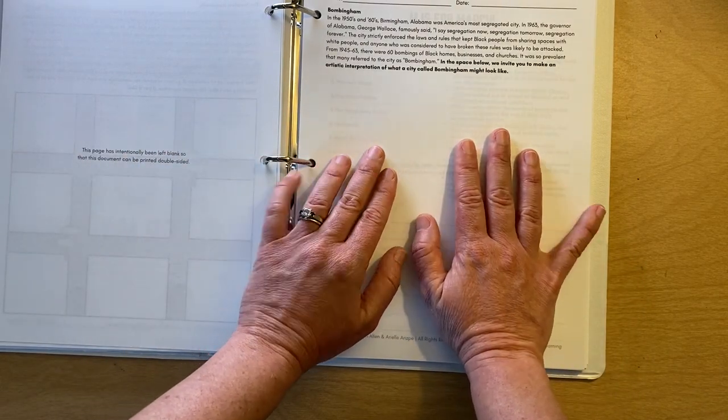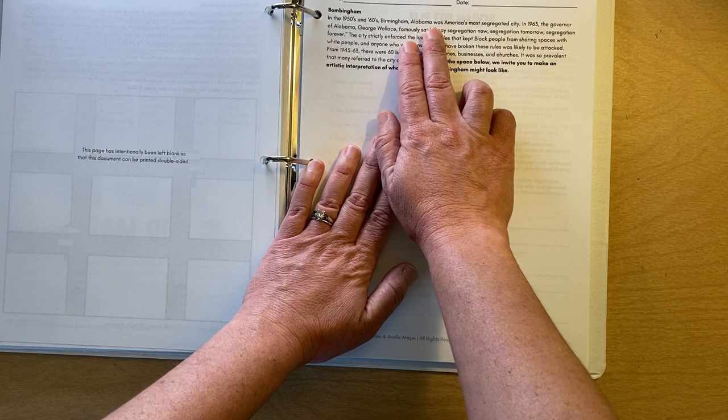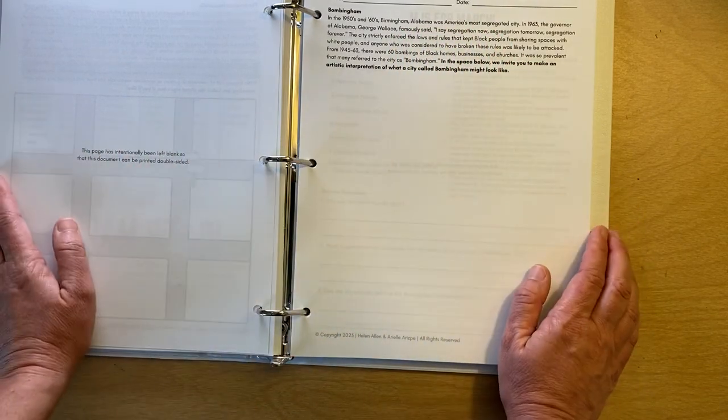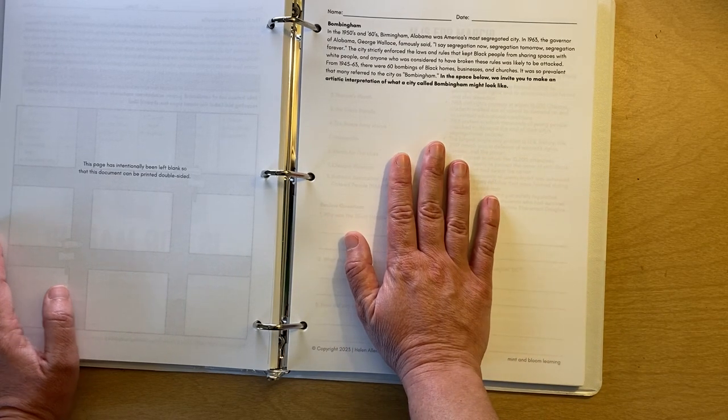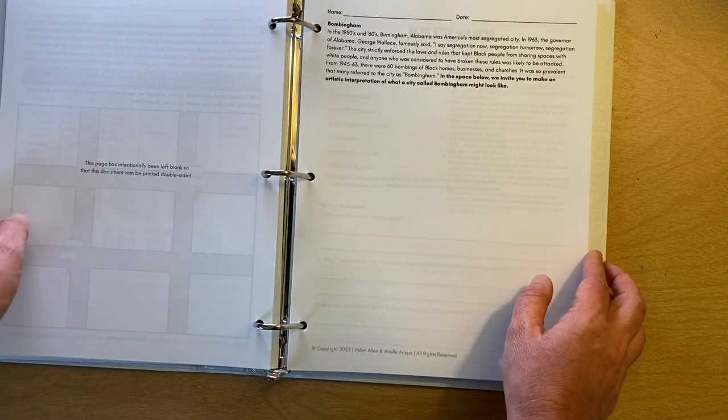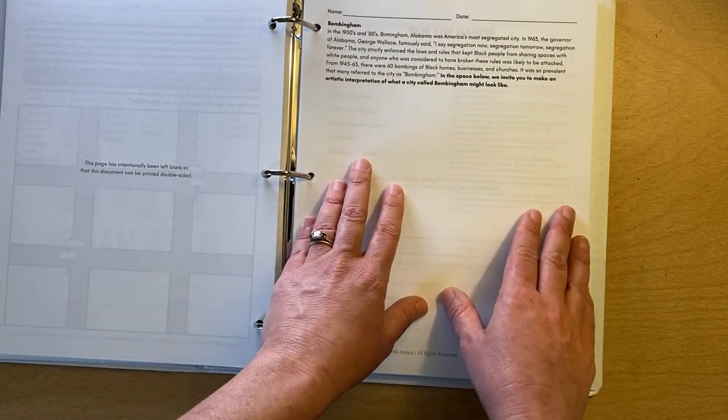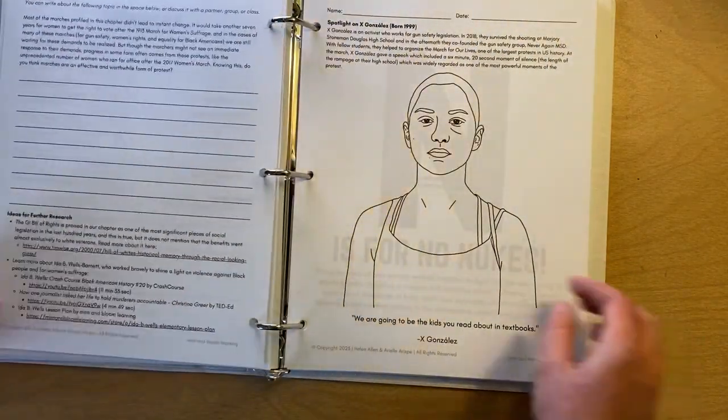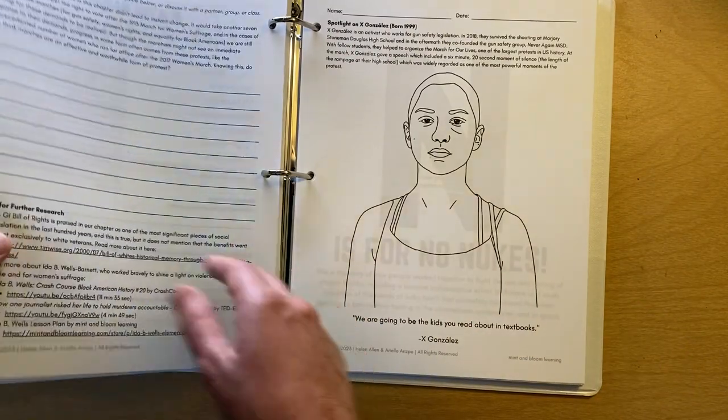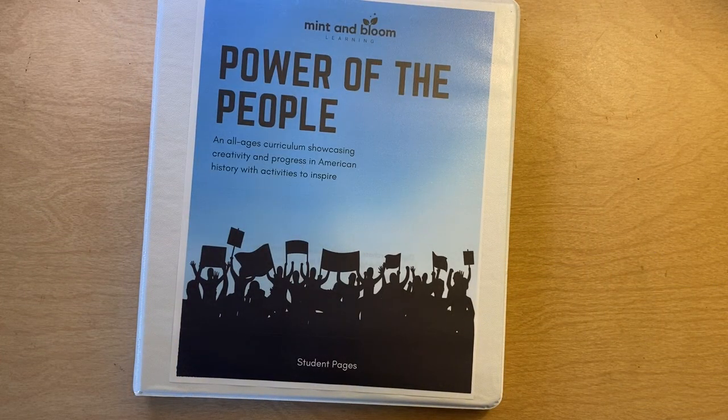We learn about Birmingham, Alabama and the marches that were protesting the segregation there. And that was America's most segregated city at the time. And so much violence happened there as a result of that segregation that the city was nicknamed Bombingham. And so we invite our artists to make an artistic interpretation of what a city of called Bombingham would look like. So I am almost at the 30 minute mark, which is, I think we can all agree, definitely too long. And probably most of you have dropped out before that, but let me put my camera around to say one farewell to you.